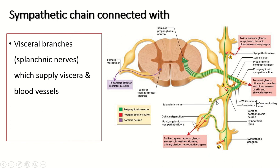The medial branch of the sympathetic ganglion, also known as the splanchnic nerve: the preganglionic fiber does not synapse within the sympathetic ganglion. It leaves the sympathetic ganglion without synapsing and reaches the collateral sympathetic ganglion, where the postganglionic neuron is present. The preganglionic fiber synapses with the postganglionic neuron within the collateral ganglion. The postganglionic fiber then distributes to the liver, spleen, adrenal glands, stomach, intestine, kidney, urinary bladder, and reproductive organs.